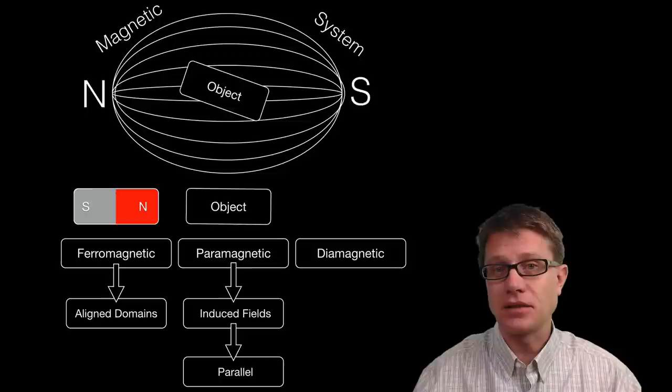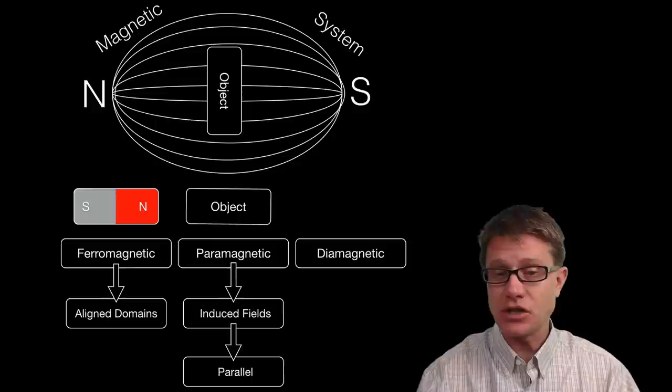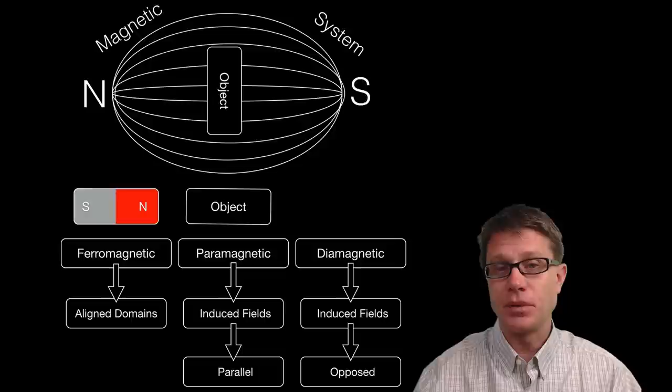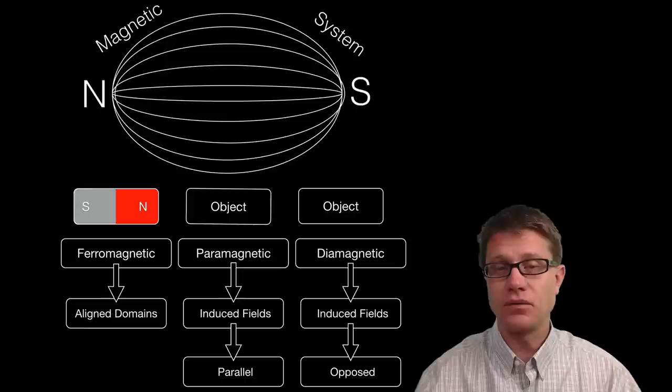Now if you take diamagnetic material and put it inside a magnetic field it will actually work in opposition. It still has these induced fields but it will be in opposition to the magnetic fields. Again you take it out, thermal motion is going to scramble all those induced fields and it goes back to being non-magnetic.